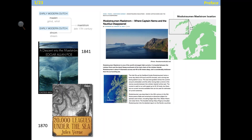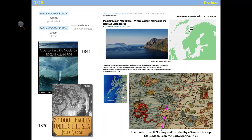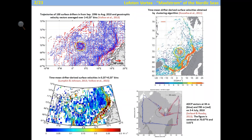The phenomenon was known for quite a long time. Back at the end of the 16th century, a Swedish bishop, Paulus Magnus, pictured this Maelstrom on his Carta Marina. Now let's see what present-day observations tell us. Here you see maps of drifter velocities obtained using somewhat different methods, but all of them show a very strong anticyclonic vortex located in the center of the Lofoten Basin.